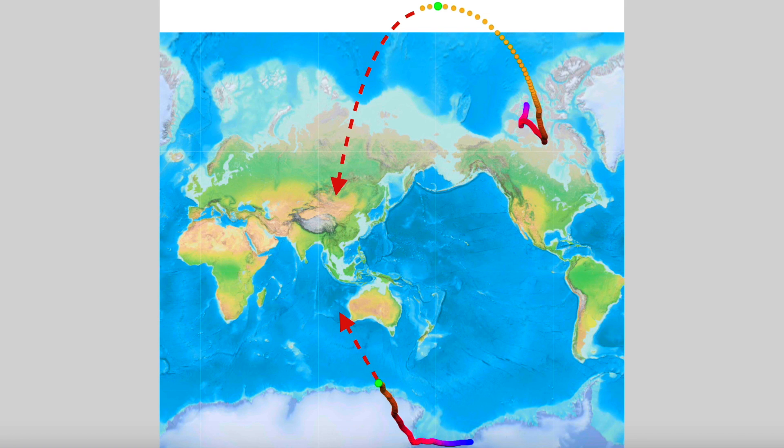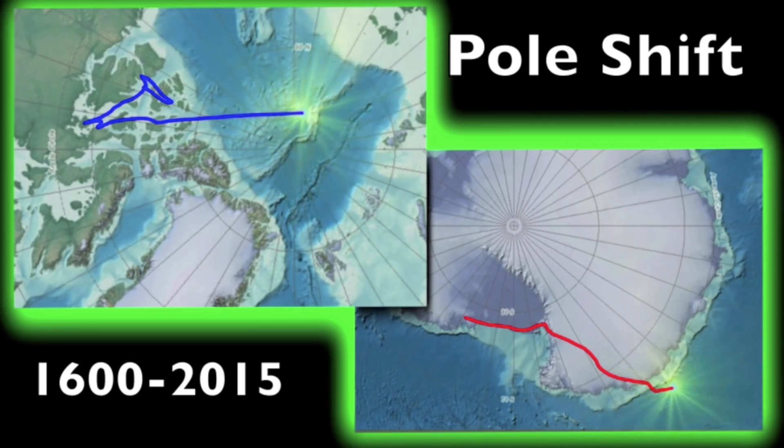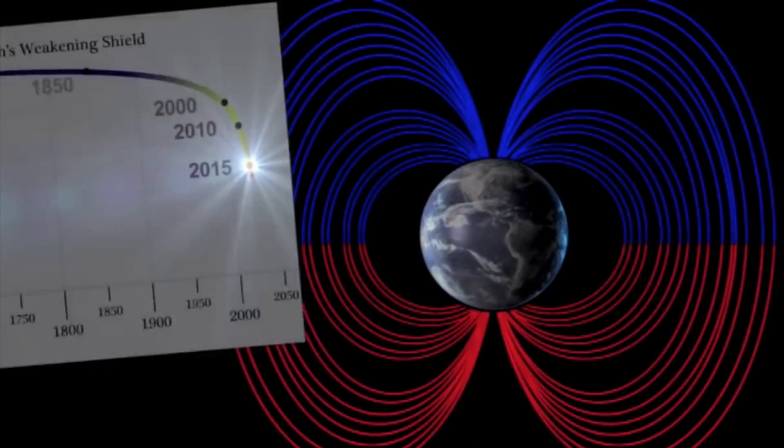For those who are just joining the program, both North and South magnetic poles are moving. South Pole is well ahead in terms of motion, having already left Antarctica, but the North is moving much faster, racing across the Arctic Ocean. As this is happening, Earth's magnetic field is weakening as well.